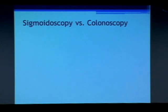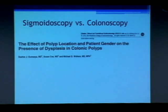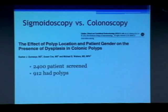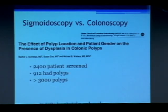I did a study myself looking at the difference between sigmoidoscopy versus colonoscopy. Sigmoidoscopy looks at only the first part of the colon, while colonoscopy looks at the whole colon. In my 2012 study of 2,400 average risk patients screened at the Mayo Clinic in Jacksonville, almost half had polyps — 912 patients had polyps and more than 3,000 polyps were removed. I found that 42% of patients who had polyps had them on the right side, meaning a sigmoidoscopy alone would miss those patients. Based on this, I believe colonoscopy is the best test.